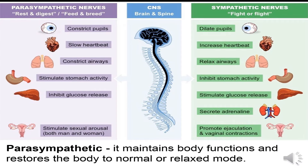To restore the body to a normal or relaxed mode, the body activates the parasympathetic nervous system. The parasympathetic nerves' main function is for rest and digest, feed and breathe, whereas the sympathetic nerves are focused on fight or flight. Parasympathetic constricts the pupils while sympathetic dilates them. Parasympathetic slows the heartbeat while sympathetic increases it. These two systems balance the activity in the body.